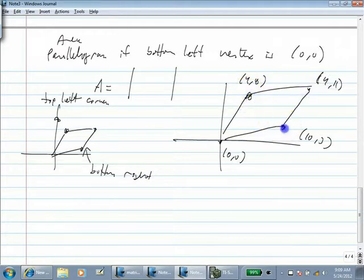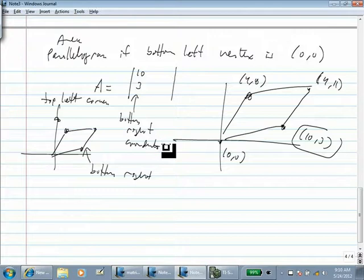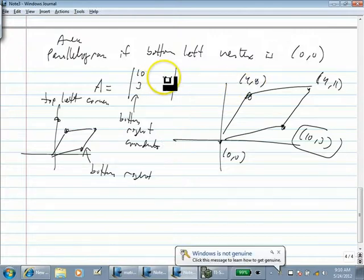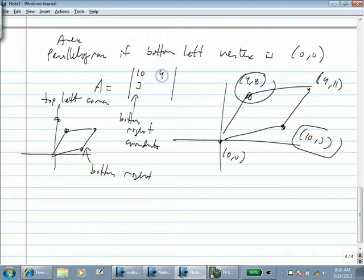And according to this, the way determinants work, or the way you could use determinants for this, is we take this bottom right point and put the two numbers here. So this is the bottom right coordinates, and over here in the second column we put the coordinates of the top left, 4, 8. The determinant: 80 minus 12 equals 68.